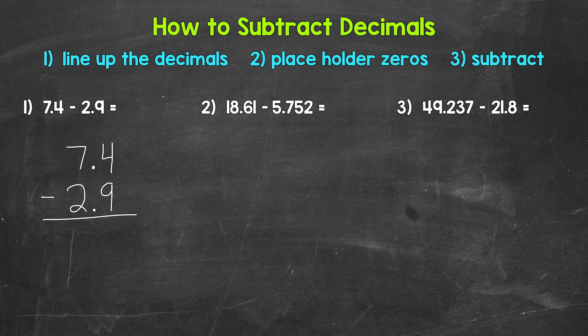Our second step is to use placeholder zeros if necessary. For number one, we're not going to use any placeholder zeros — we don't need them. But for numbers two and three, we will, so we will see what those are used for in our next examples. Now we just subtract, starting with the tenths place, where we have four minus nine, which we are going to need to borrow.